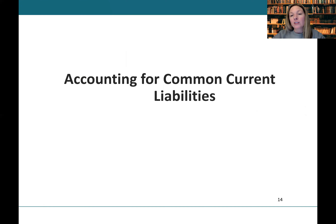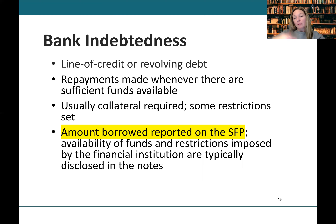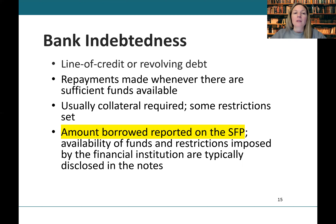Let's look at the accounting for some common current liabilities. Bank indebtedness is a very common current liability — it's a line of credit, a revolving debt arrangement. Companies establish a line of credit with a bank where they can keep lending up to a certain limit, repay it, and borrow again. In order to set up this type of facility, there's usually collateral required and some restrictions are set. On the statement of financial position, the draw as at the reporting date would be recorded in current assets, and any restrictions imposed would be disclosed in the notes.